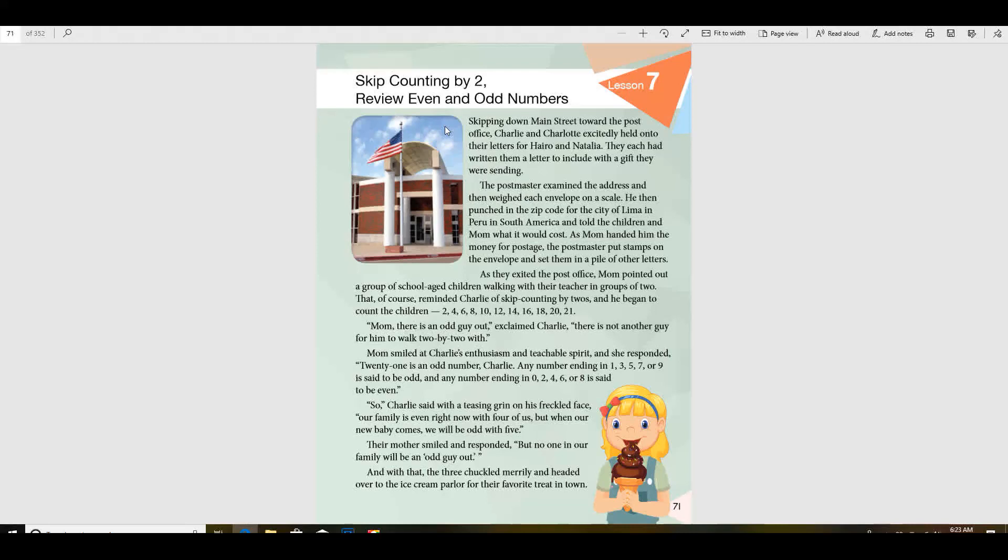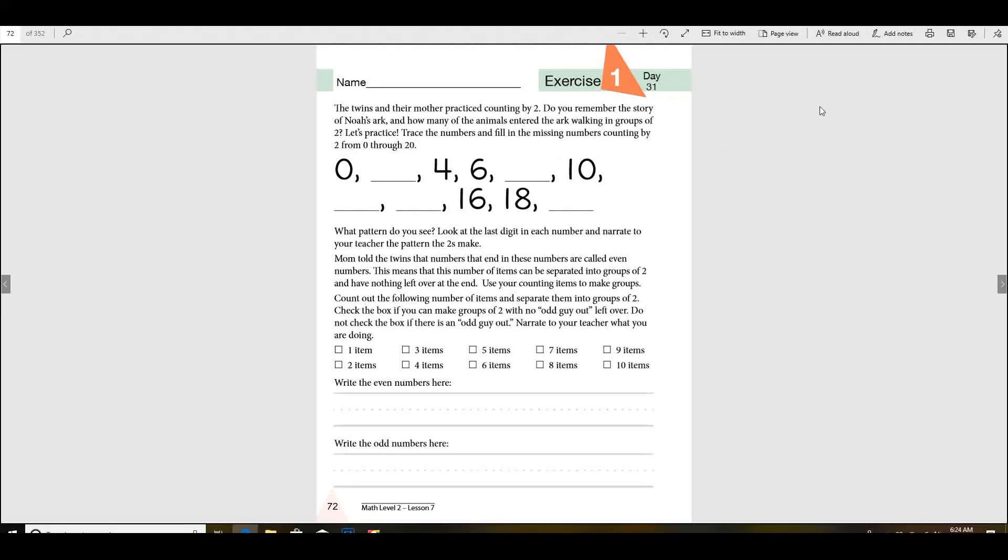Mom smiled at Charlie's enthusiasm and teachable spirit and she responded, twenty-one is an odd number Charlie. Any number ending in one, three, five, seven, or nine is said to be odd, when any number ending in zero, two, four, six, or eight is said to be even. So Charlie said with a teasing grin on his freckled face, our family is even right now with four of us, but when our new baby comes we will be odd with five. Their mother smiled and responded, but no one in our family would be an odd guy out. And with that the three chuckled merrily and headed over to the ice cream parlor for their favorite treat in town.